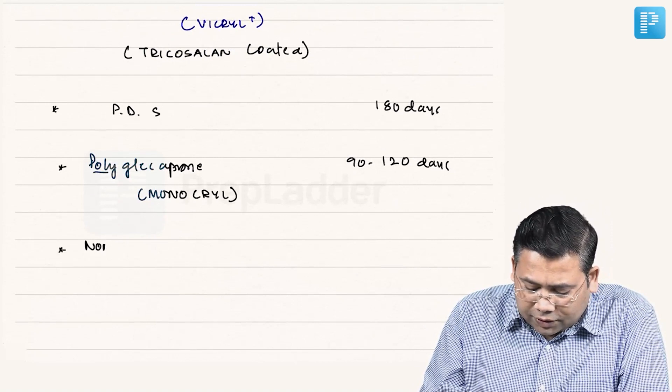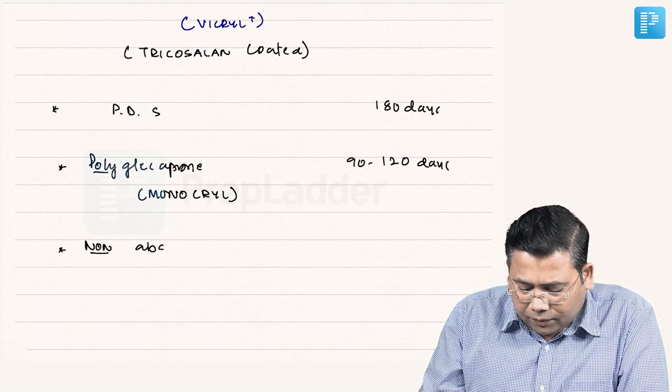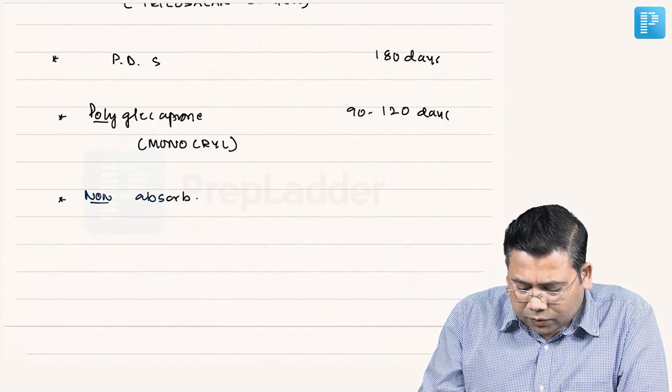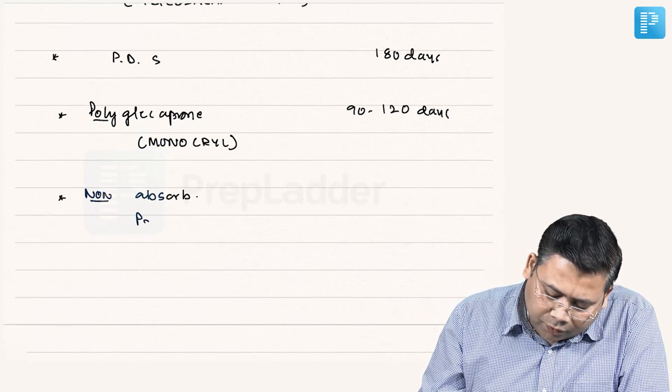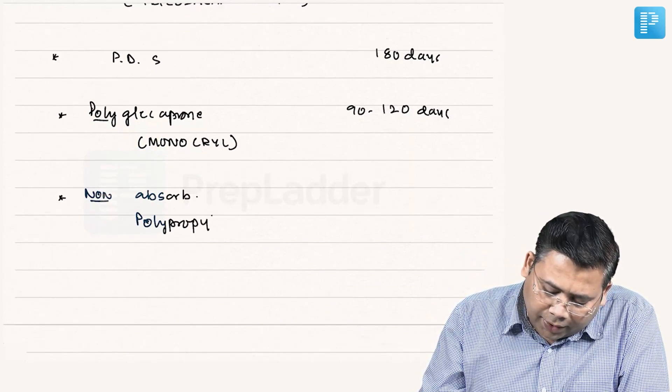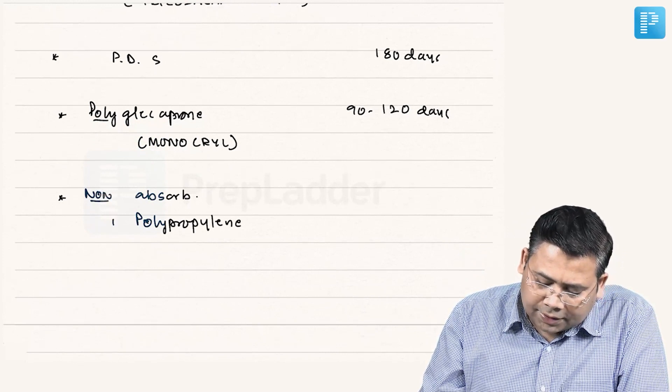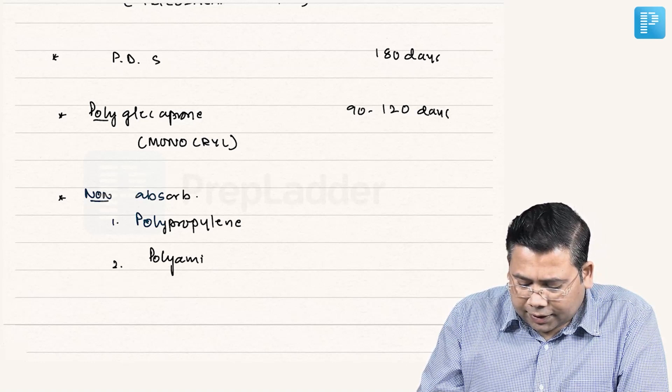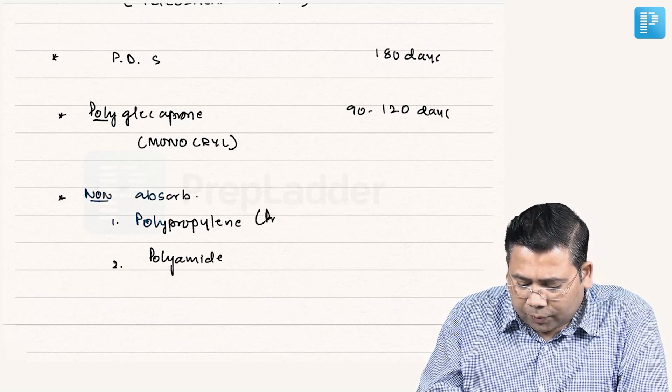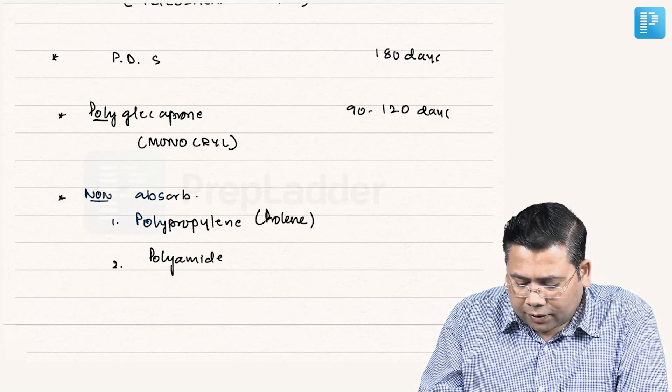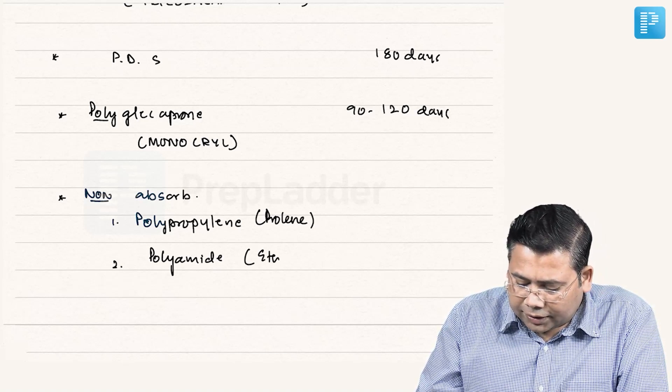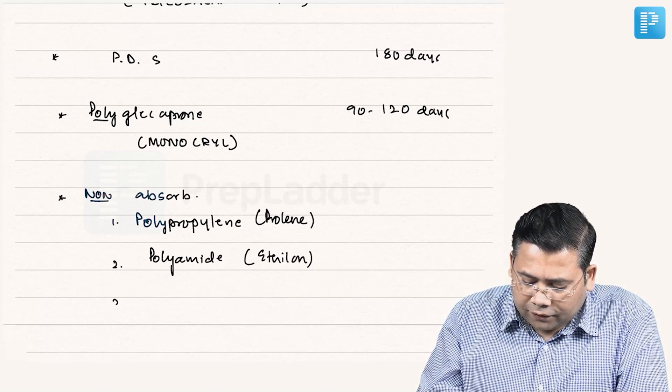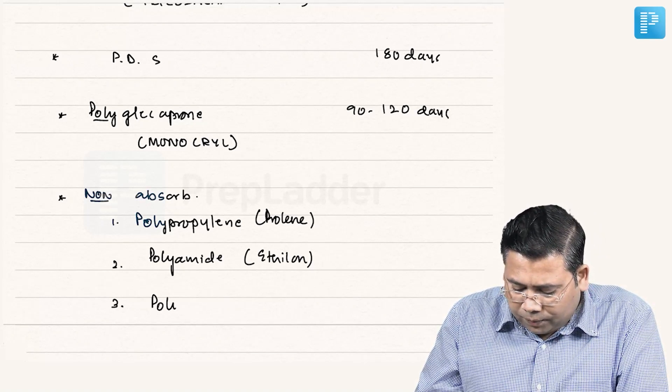Then we also have certain non-absorbable sutures. When we talk about non-absorbable sutures, we have Prolene that is polypropylene. Yes, we have polyamide that is Ethilon. So polypropylene or Prolene.